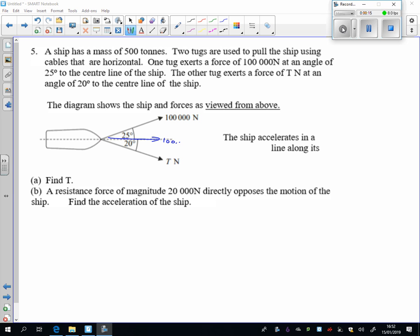we've got 100,000 cos 25 and up here we've got 100,000 sine 25. We've also got pulling it along here T cos 20 and pulling it down T sine 20. Now because it's going straight down the middle here, these two forces are going to be equaling to each other.